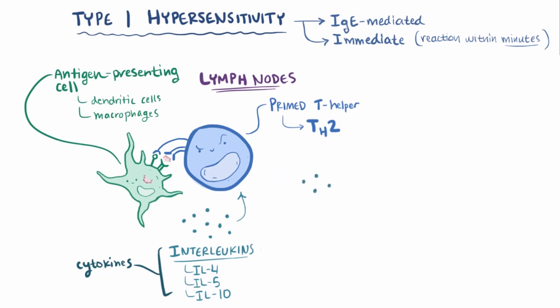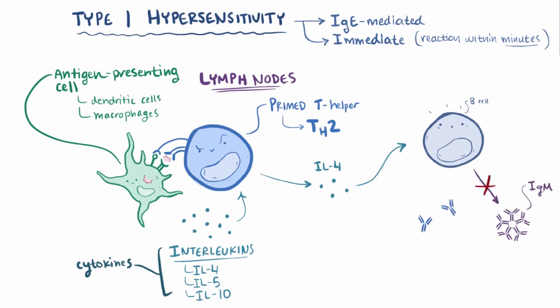The excited TH2 cells release a bit of their own interleukin 4 and get the B cells to undergo antibody class switching, and so the B cell switches from making IgM antibodies to making IgE antibodies, which are specific to that ragweed pollen in our example.